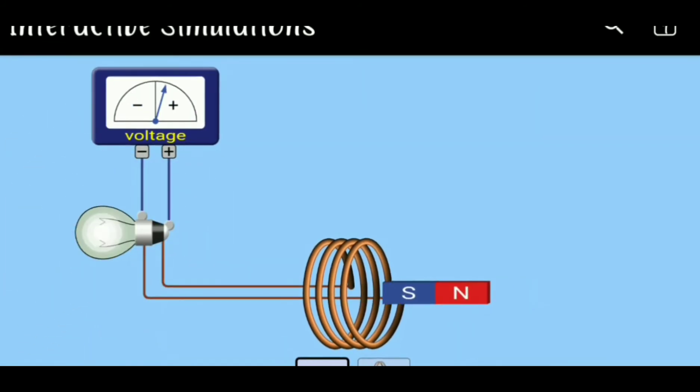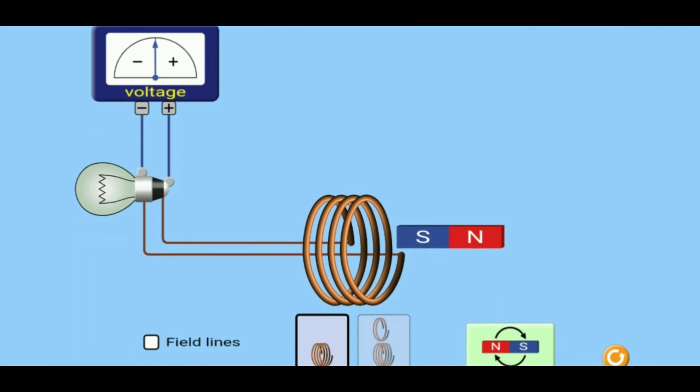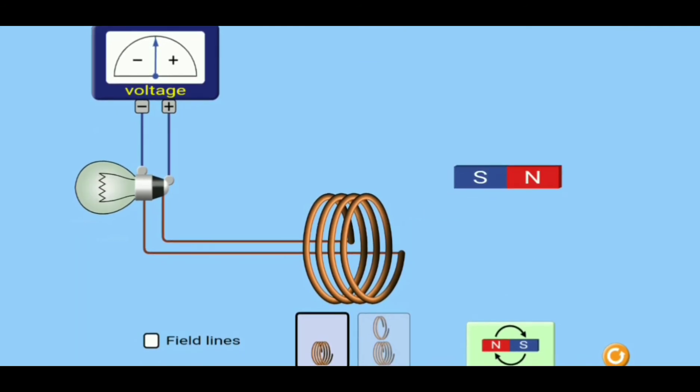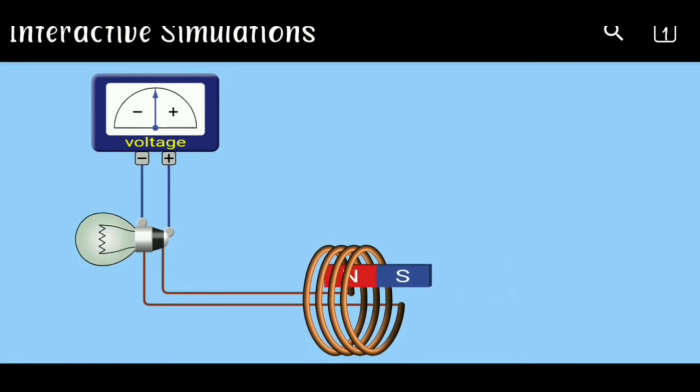But what happens when it is stopped? The galvanometer shows no deflection. Now if we change the poles of the magnet and move the north pole inside, the galvanometer again shows deflection, but opposite to the direction when we moved the south pole.